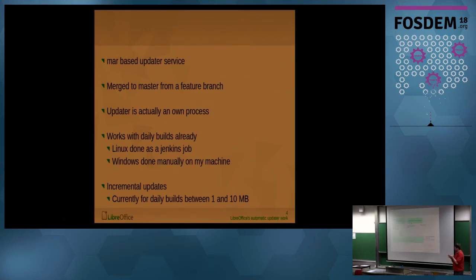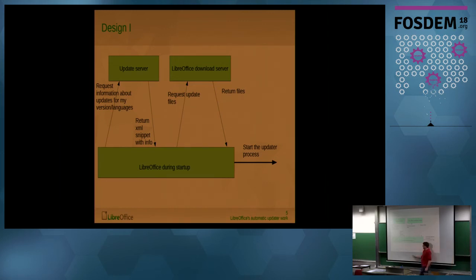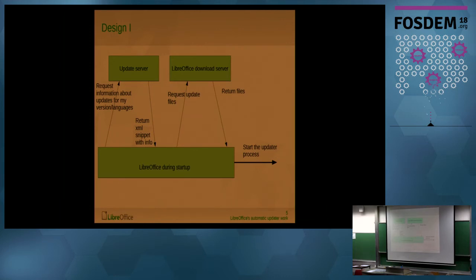So how does the update process work? We have our running LibreOffice, and all the work for the automatic update happens during startup — basically to avoid needing to restart LibreOffice later when someone has already done some work in a document. As early as possible, we request from our update server running on TDF infrastructure. We send the server our build ID and our language packs, and the update server tells us whether there's an update inside a small JSON snippet. That snippet contains the location of the update files, size, and hash.